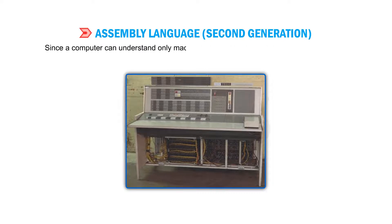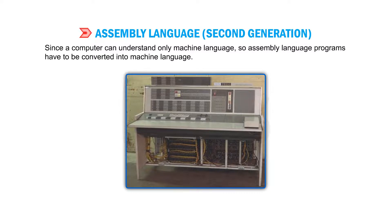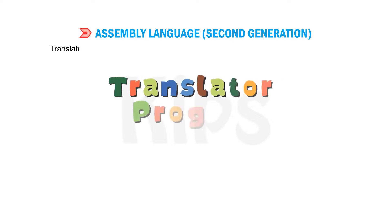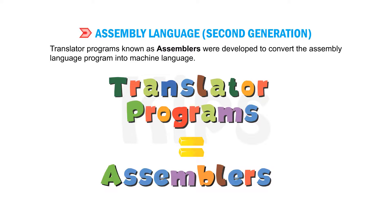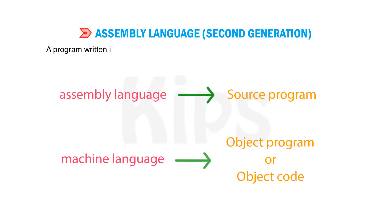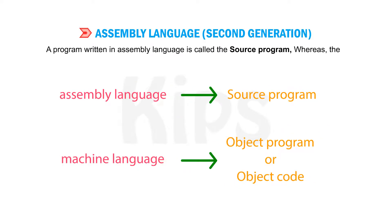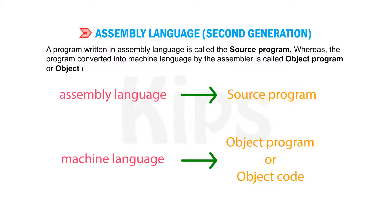Since a computer can understand only machine language, assembly language programs have to be converted into machine language. Translator programs known as assemblers were developed to convert the assembly language program into machine language. A program written in assembly language is called the source program, whereas the program converted into machine language by the assembler is called the object program or object code.